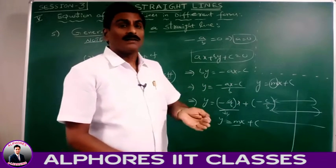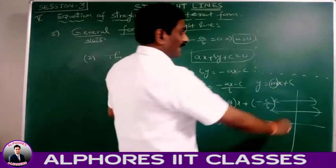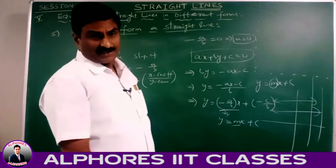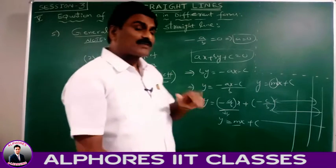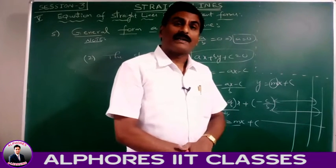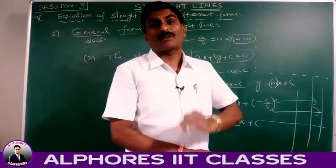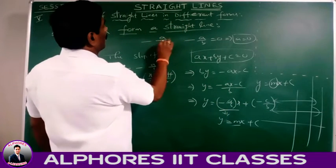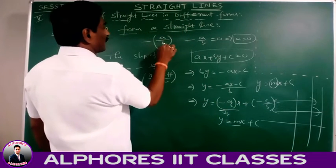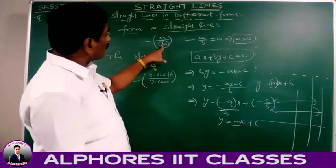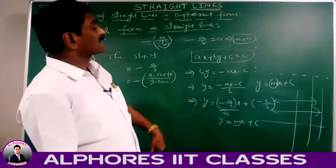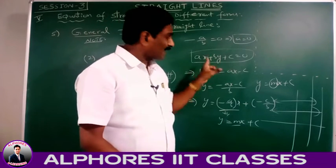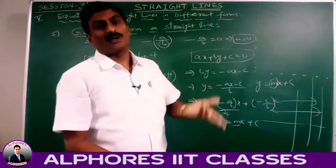Suppose the line is a vertical line — parallel to the y-axis. The slope of a vertical line is not defined (infinite). The slope here is -a/b. For it to be not defined, the denominator must be 0, so b = 0. If b = 0, then the line is a vertical line or parallel to the y-axis.